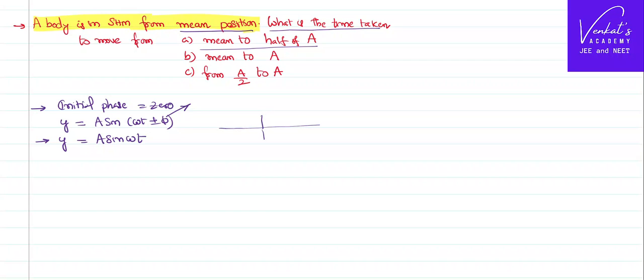So this is the mean position, this is the extreme position. If you move from here to here, amplitude is a. I want to move from mean position to half the amplitude, y equal to half the maximum displacement, that is a by 2. How much time it takes is the question being asked.